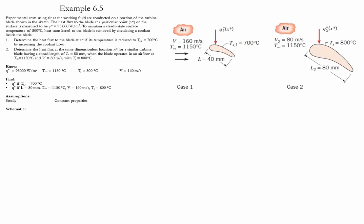In the first part, we need to determine the heat flux of the blade at the same position X* if the temperature is reduced to 700 instead of 800 degrees Celsius. In the second part, we need to determine the heat flux at the same location X* for a similarly shaped turbine where the length doubles to 80 millimeters, the velocity of the fluid is divided by 2, and the temperature of the blade is once again 800 degrees Celsius.